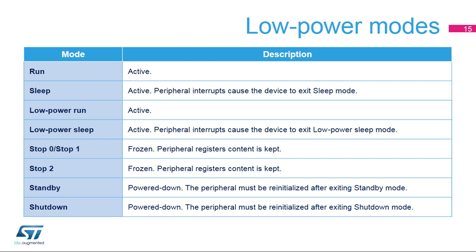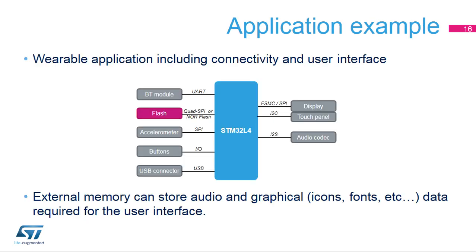Wearable applications require low-power management together with a high-quality user interface. This can be achieved using the STM32L4 FSMC to connect the display, thanks to its flexibility and widely programmable parameters to interface with LCD modules. In addition, the FSMC or Quad SPI interface may be used to access an external flash memory containing all graphical content needed, such as background images, high-resolution icons, or fonts to support multiple languages. Additional audio data for ringtones can also benefit from the large space offered by the external flash memory.